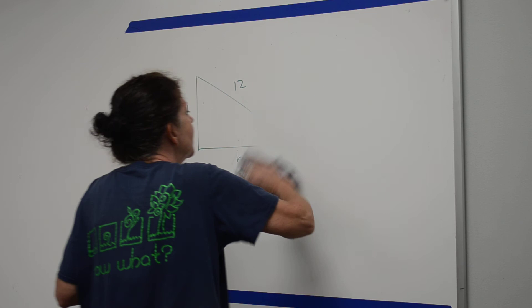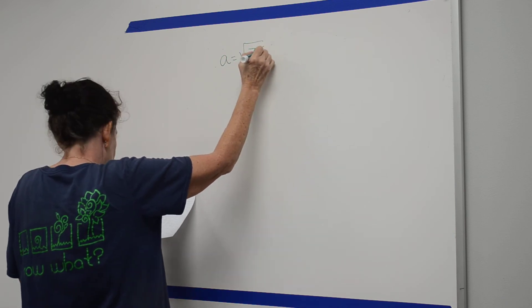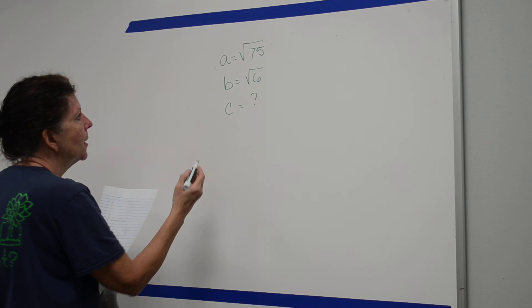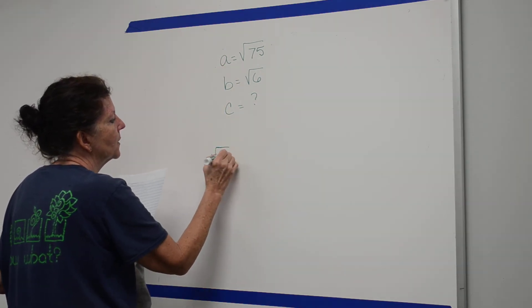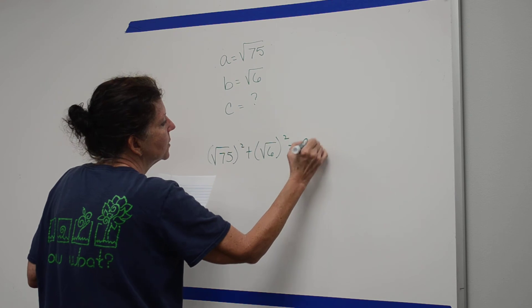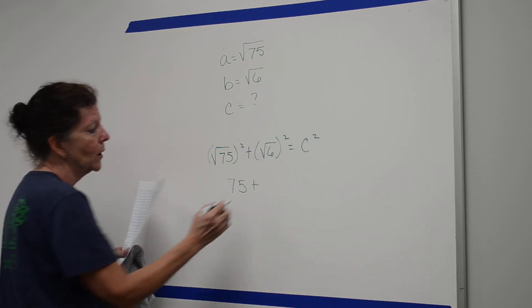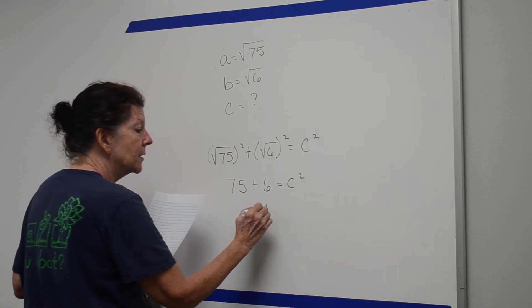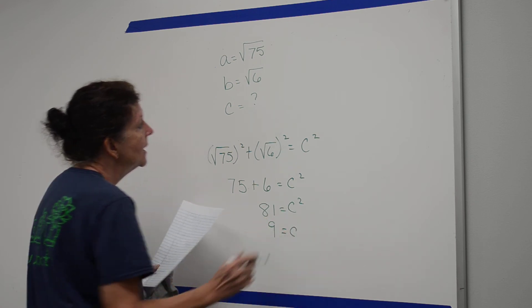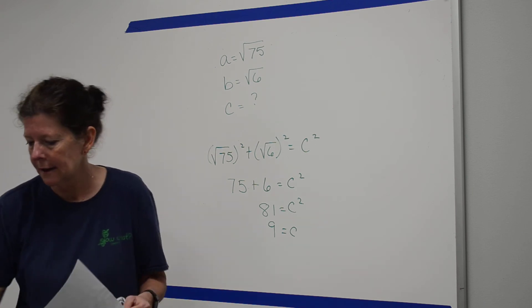Occasionally they give you letters. The hypotenuse is always C. If A equals the square root of 75 and B equals the square root of 6, set up: square root of 75 squared plus square root of 6 squared equals C squared. The square root of 75 squared is 75, and the square root of 6 squared is 6, so C squared equals 81. Taking the square root gives C equals 9. Technically it's plus or minus 9, but a measurement can't be negative, so the answer is positive 9.